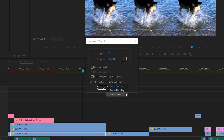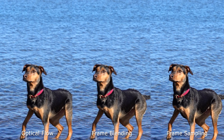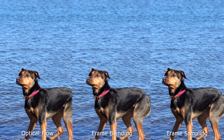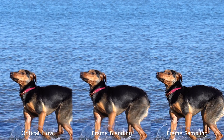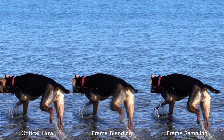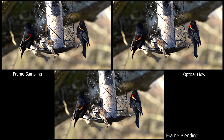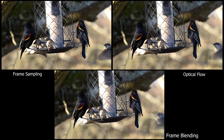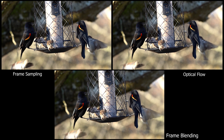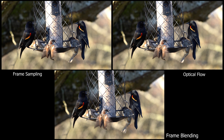Each setting has its own look and you'll have to decide which one works best for your clip. If you're not pushing your slow motion too far, Optical Flow does a fantastic job — though it uses the most resources of the three. It works best for slower scenes. With fast-paced action shots, it can get a little weird when you don't have enough frames. Messing with this one setting can drastically improve your slow motion footage.